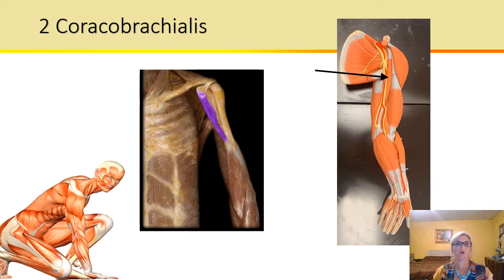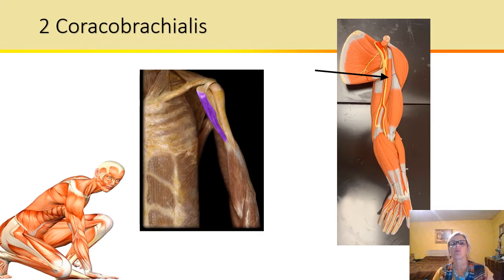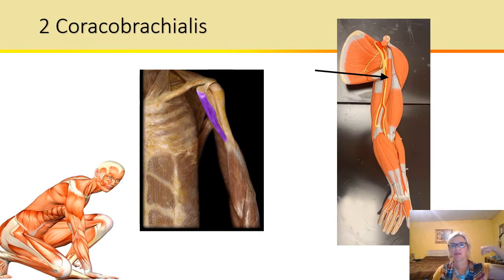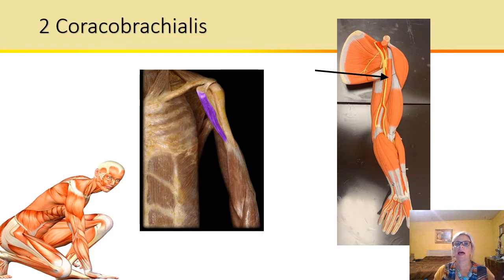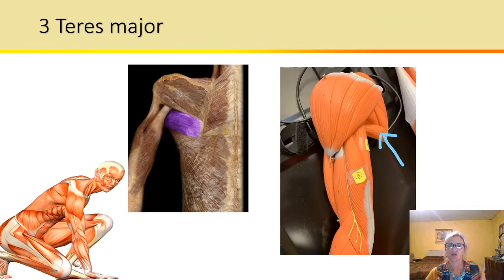All right, so here we have the coracobrachialis. This attaches to the coracoid process on the arm and this flexes and adducts — brings in — the arm. Remember: ab- means to abduct, to remove or pull away, like abducting a child. Adduct means adding them together, bringing them closer in.